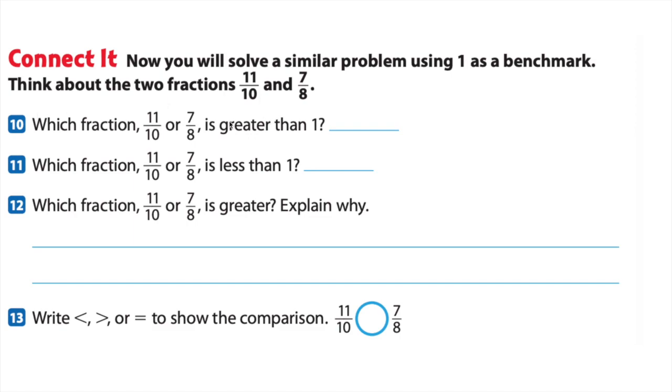That's the first question, actually. Which fraction is greater than one? Eleven-tenths. Our next question is which of those is less than one? And it's pretty obvious since we already figured out this is greater than one. It has to be seven-eighths. You can tell that also because eight-eighths would be equivalent to one. So seven-eighths is less than one.